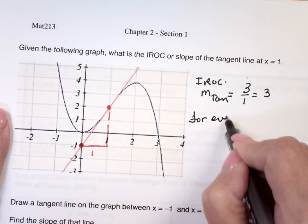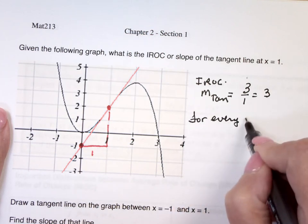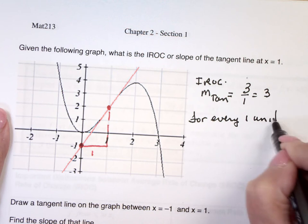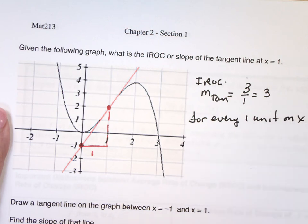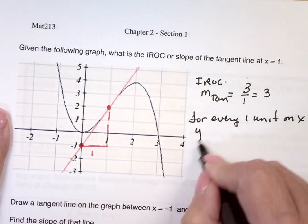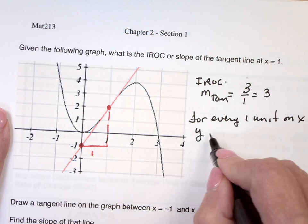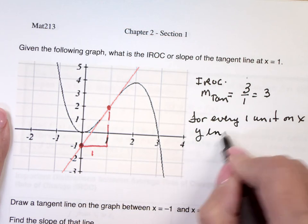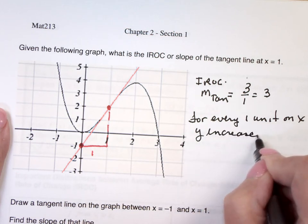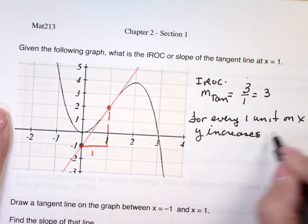So that says, for every one unit on x, y does what? Increases, how? By 3 units.